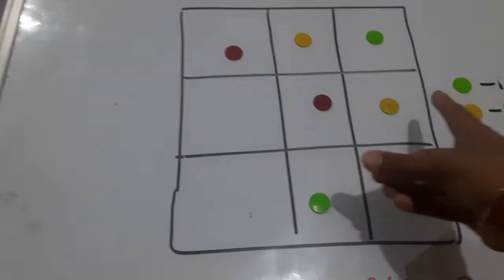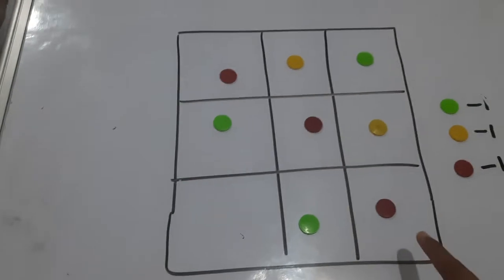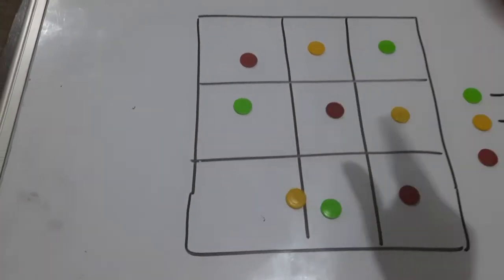So then you can select this as a row-wise. Yellow, red, so obviously green will come. Here red and green, so the option is only yellow.